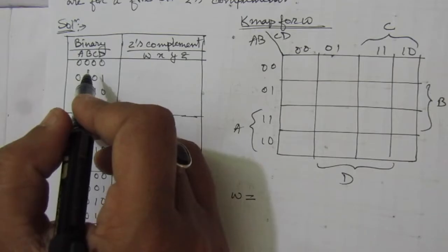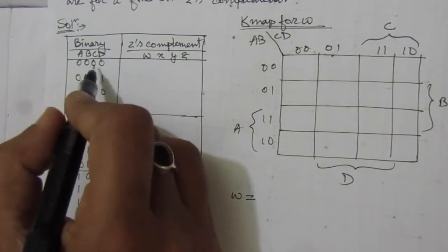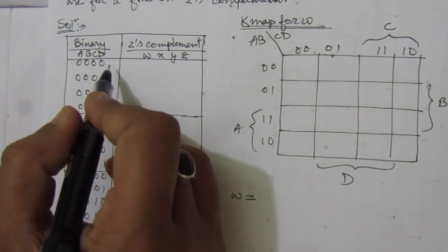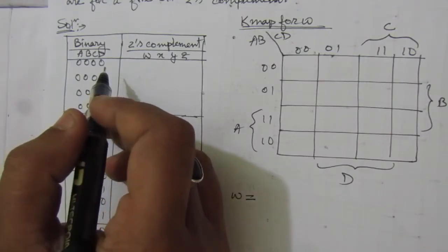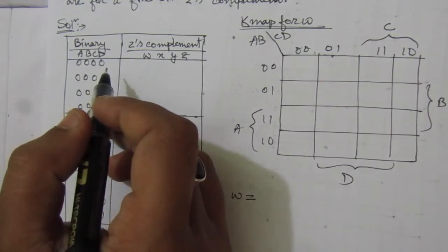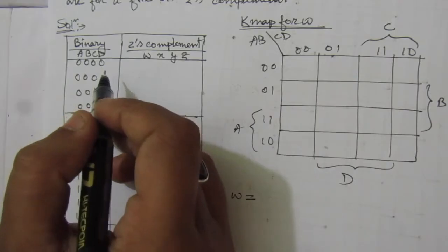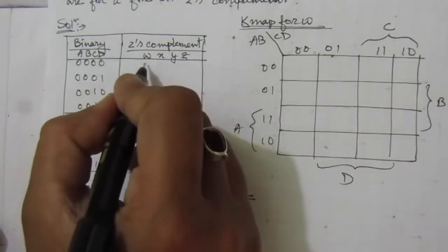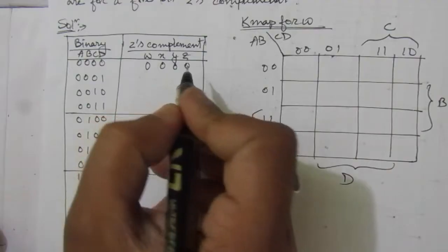For 0000, the one's complement will be 1111. Then for finding out the two's complement, we have to add 1 to 1111. We will get 10000, and the carry 1 will be discarded, so the two's complement of 0000 is 0000.